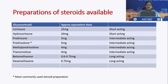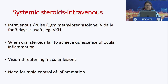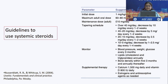Multiple steroid preparations are available, but prednisolone is the most commonly used form. Intravenous pulse therapy — typically 1 gram per day for three days — is often given and is very useful in etiologies like VKH. It is also used when oral steroids fail to achieve quiescence of ocular inflammation, for vision-threatening macular lesions, and when rapid control of inflammation is needed. These are the key guidelines for using systemic steroids.